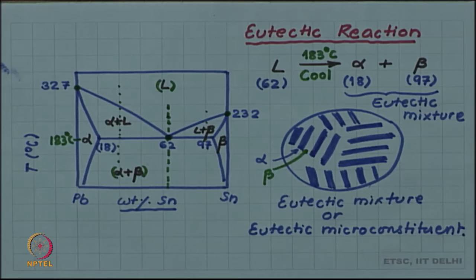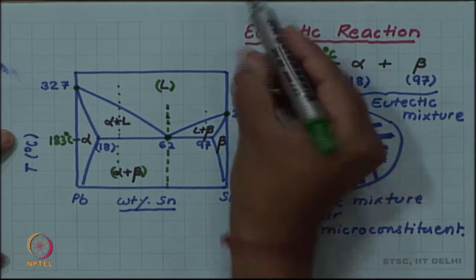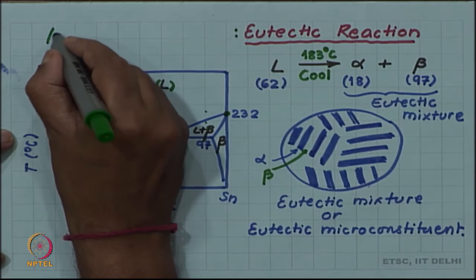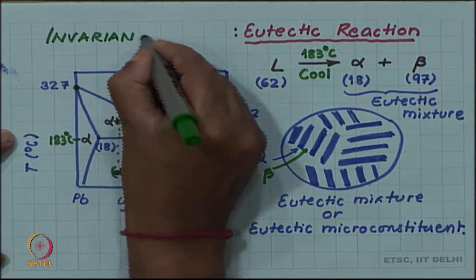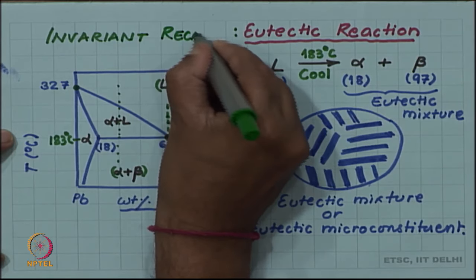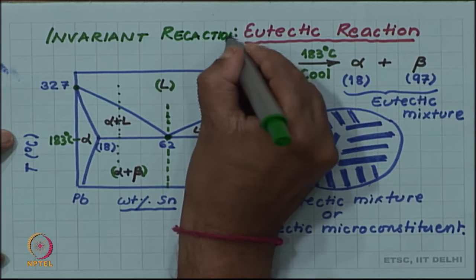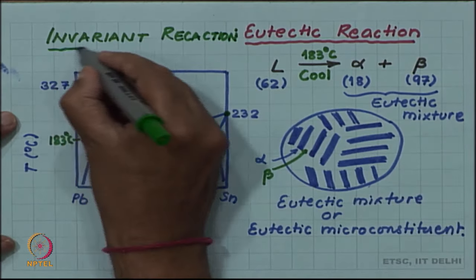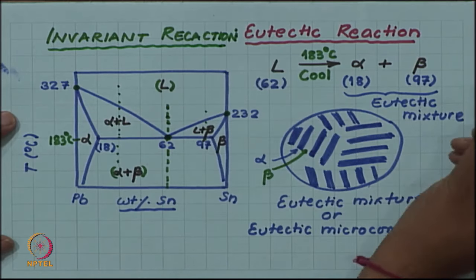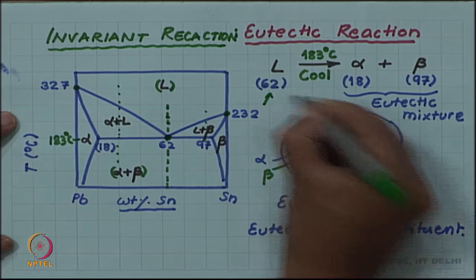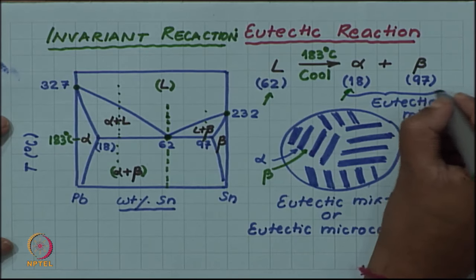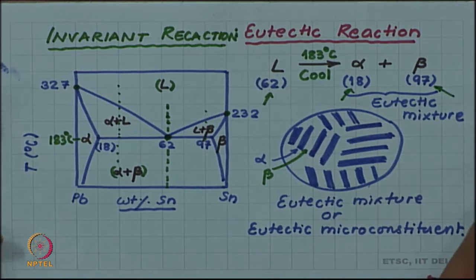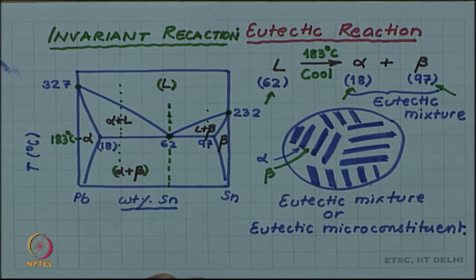I will end with mentioning one point that this eutectic reaction is an example of an invariant reaction. What it means is that the eutectic reaction happens at fixed composition of the phases. Liquid in this case is of 62 weight percent, alpha is 18 weight percent, and beta is 97 weight percent. And it happens at a fixed temperature.